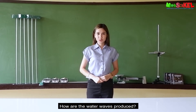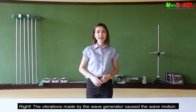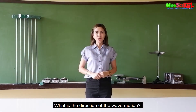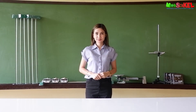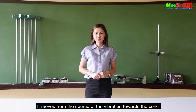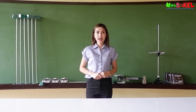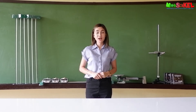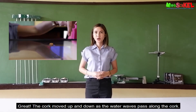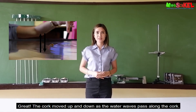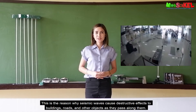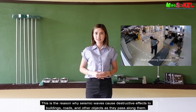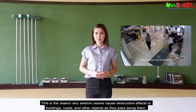How are the water waves produced? The vibrations made by the wave generator cause the wave motion. The wave motion moves from the source of the vibration towards the cork. The cork moves up and down as the water waves pass along. This is the reason why seismic waves cause destructive effects to buildings, roads, and other objects as they pass along.